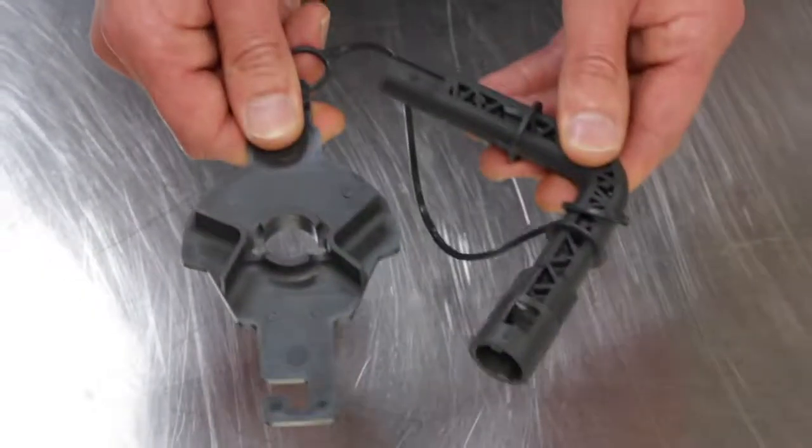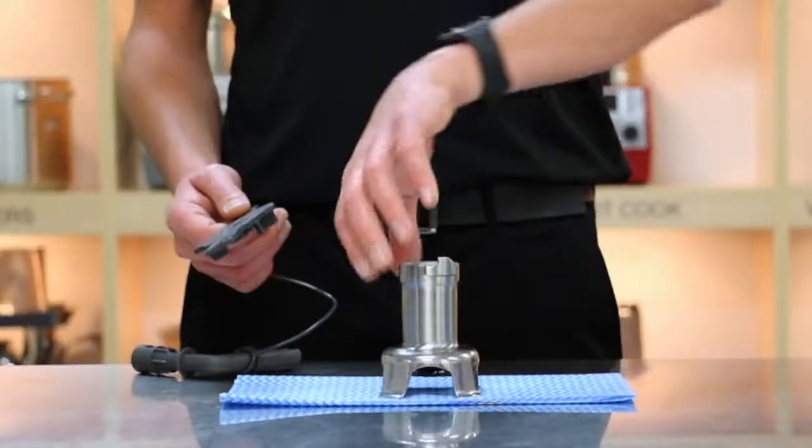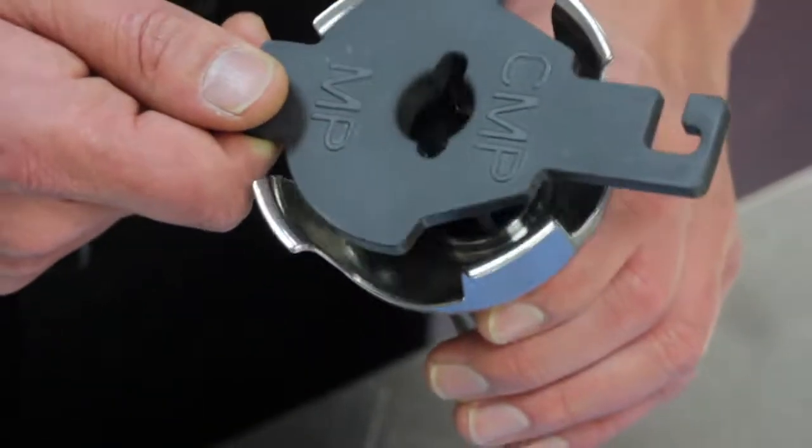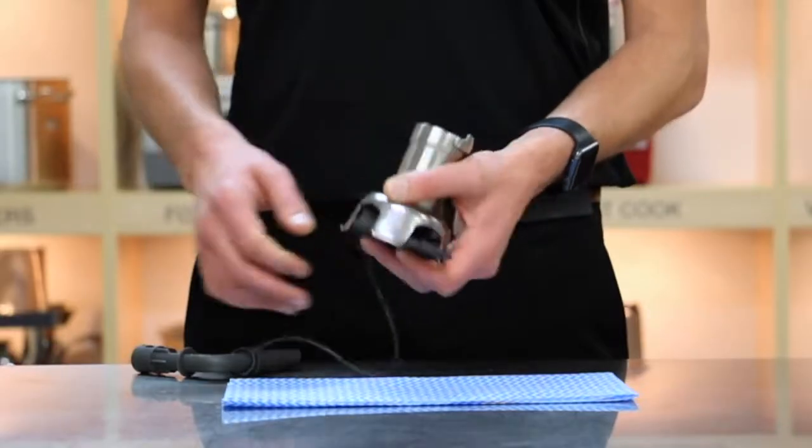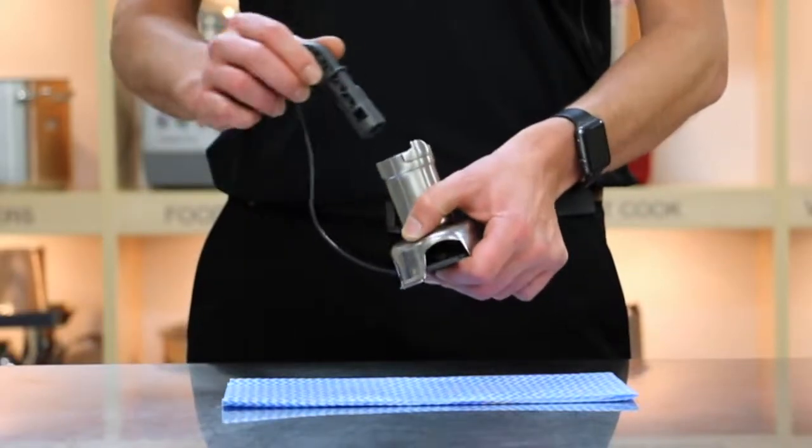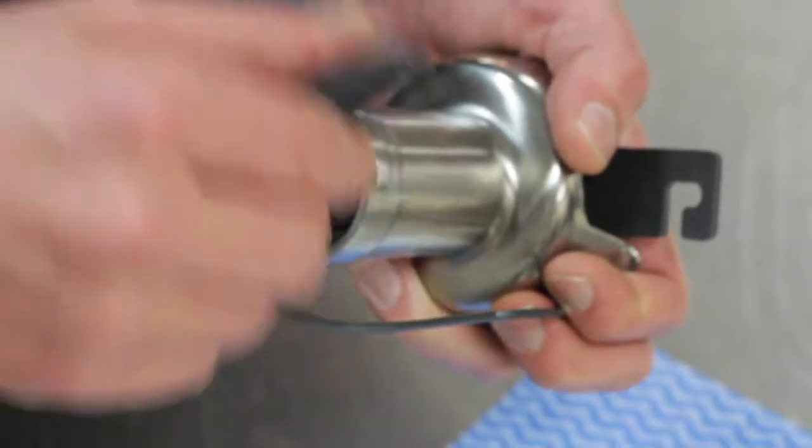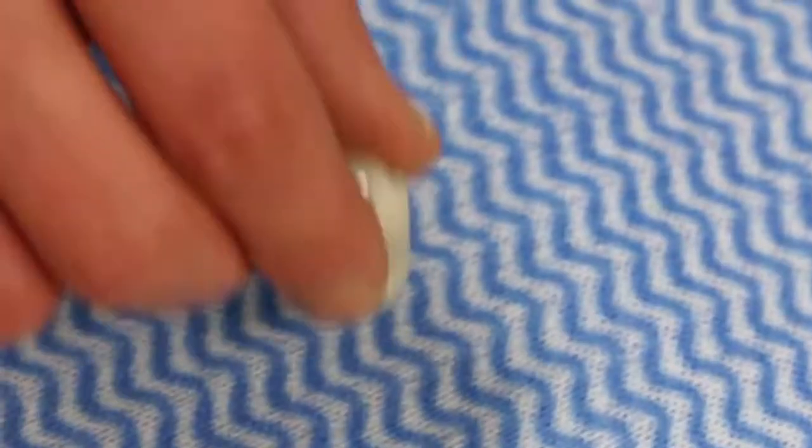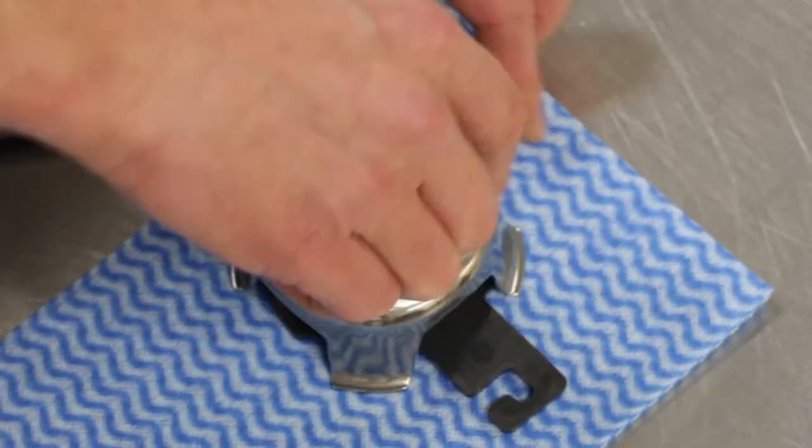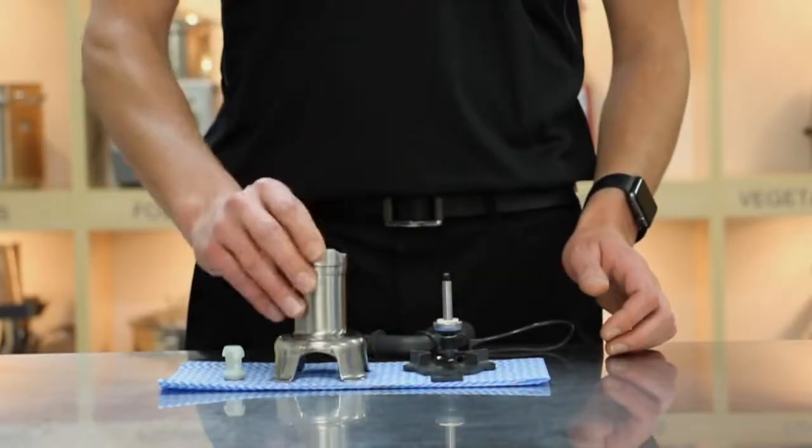To remove the blade assembly, you will need these tools. Secure the blade with the flat plate. Ensure your hand is not touching the blade. Slot in the L-shaped tool on the coupling and turn anti-clockwise. Once loosened, the bell and blade assembly will detach into three pieces.